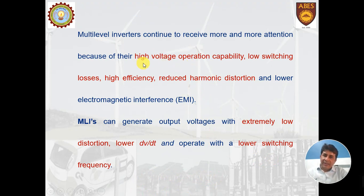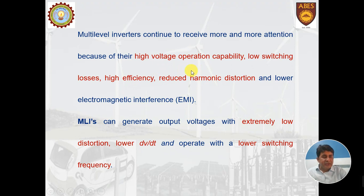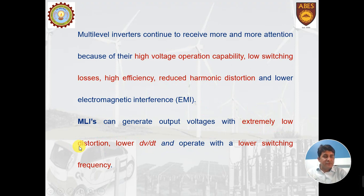Multi-level inverters have high voltage operation capability: they can give different voltage levels and raise the output voltage from small input voltages. They give extremely low distortion — as you increase the number of steps the waveform becomes more sinusoidal, reducing harmonic content and therefore distortion.